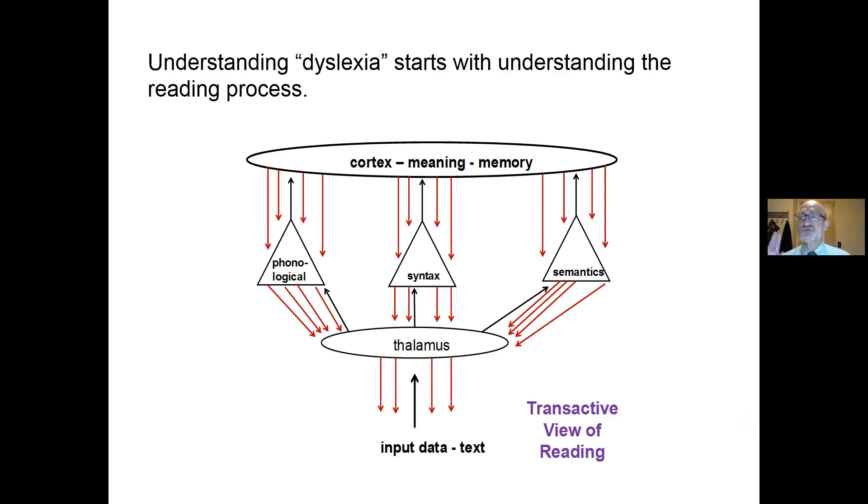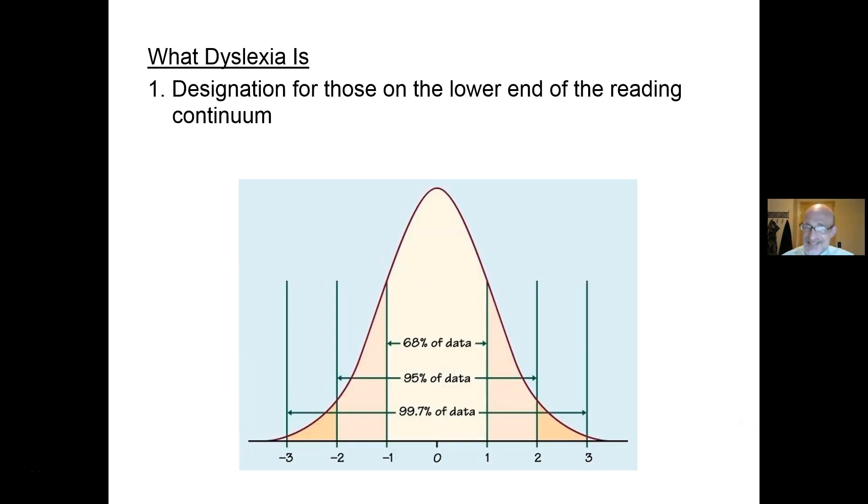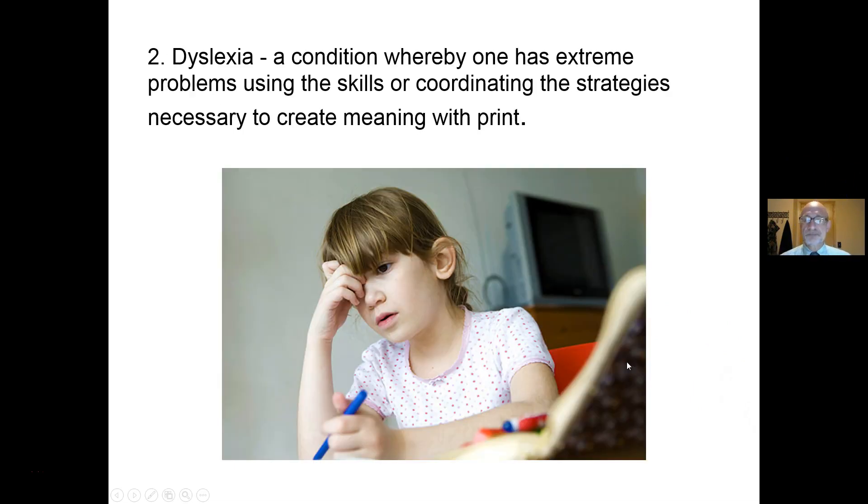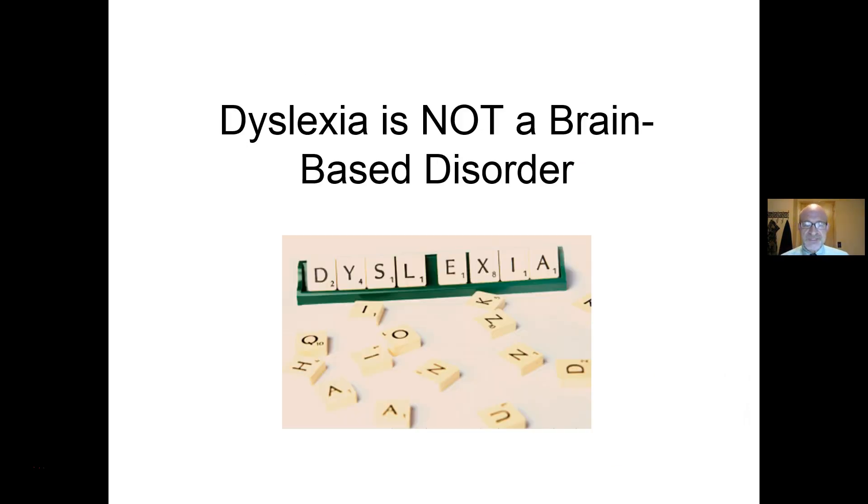Understanding dyslexia starts with understanding the reading process. If you think of reading simply as sounding out words, you do not understand dyslexia. Dyslexia is a designation for those on the lower end of the reading continuum, usually two standard deviations below the mean. A condition whereby one has extreme problems using the skills or coordinating the strategies necessary to create meaning with print. That's a more apt definition of dyslexia. It is not a brain disorder.